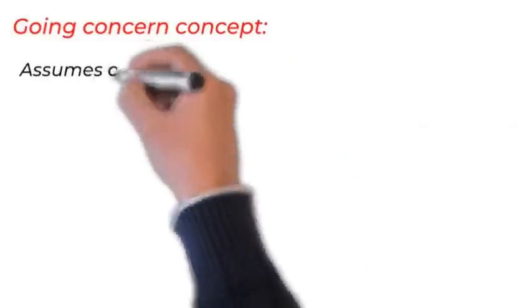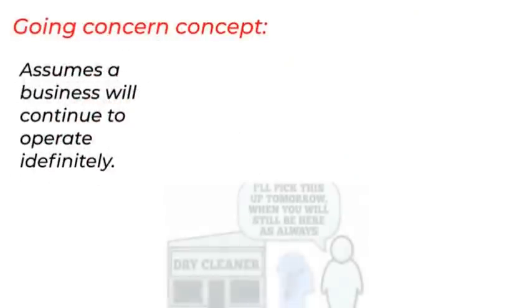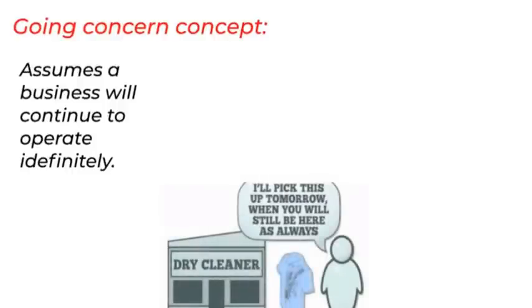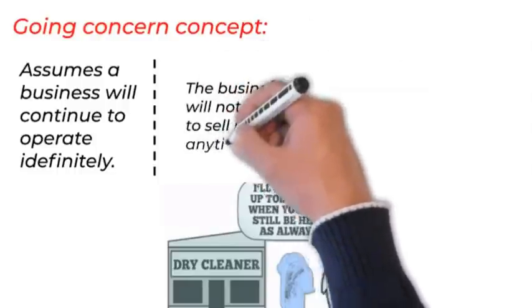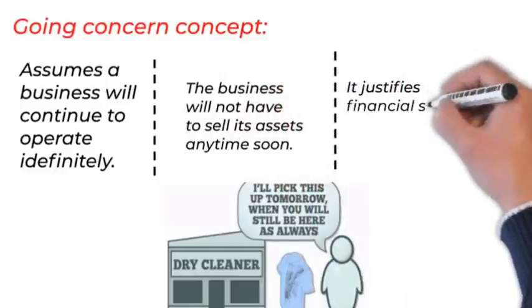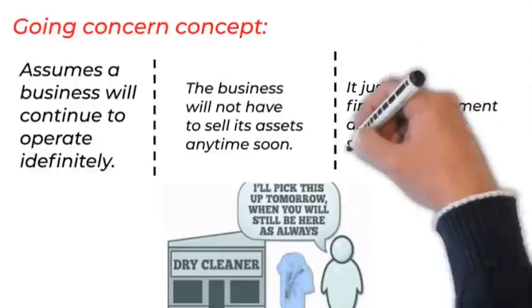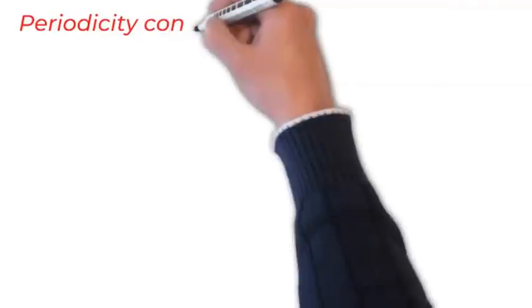Going Concern. This concept assumes that a business will continue to operate indefinitely. It assumes that, for the foreseeable future, the business will not be winding up. This gives the assumption that business will not have to sell its assets anytime soon and it will meet its obligations. So, it justifies financial statement as a continuous series of statements.